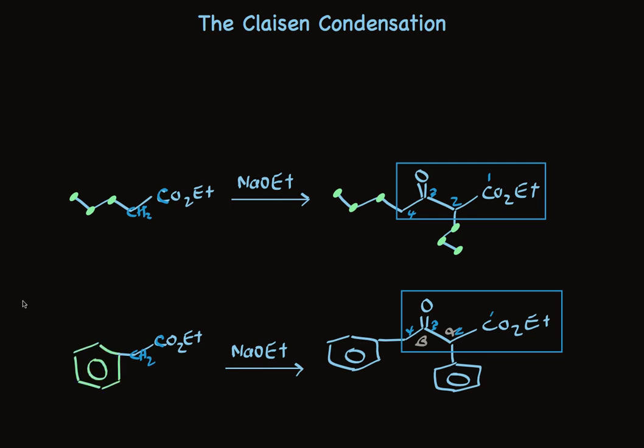This n-propyl group is attached at the two carbon and the four carbon. And below, there's a phenyl group in the starting material. And there are two phenyl groups in the product, one at the two carbon and one at the four.